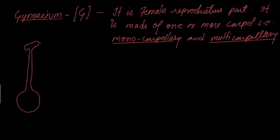The parts of the carpel are: this one is the stigma, this one is the style, and this one is the ovary.